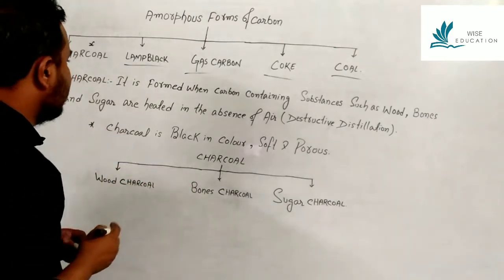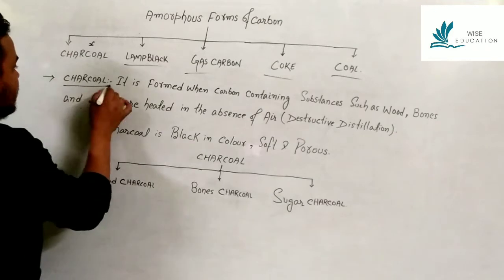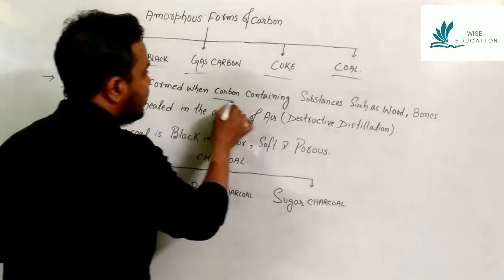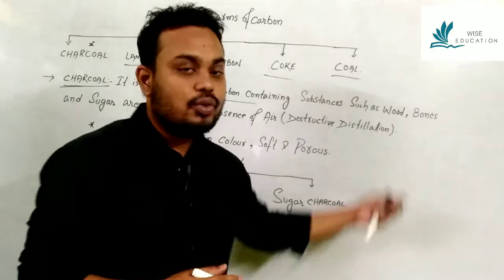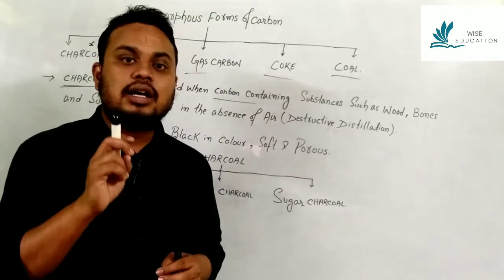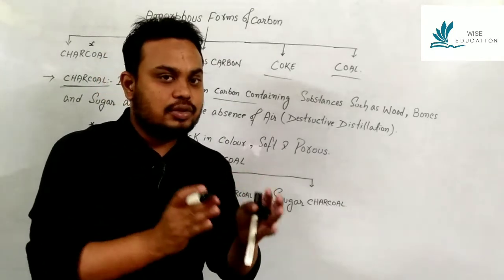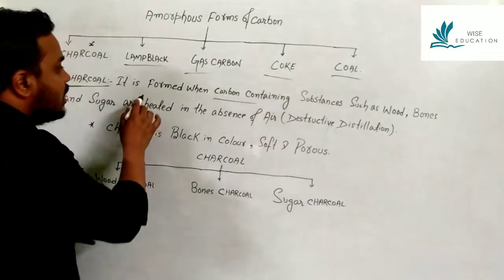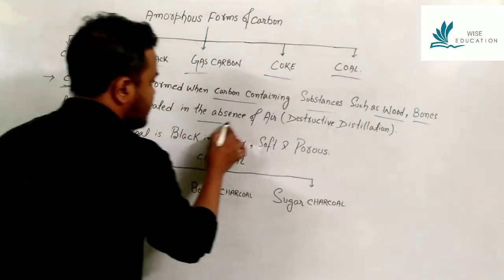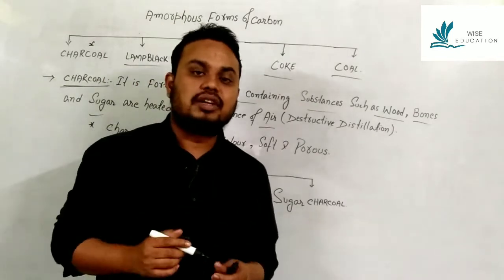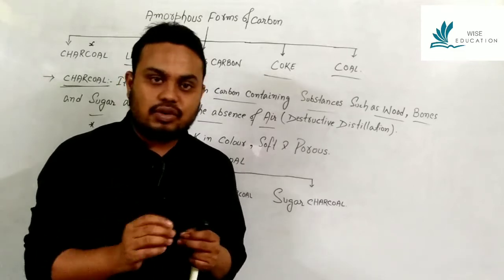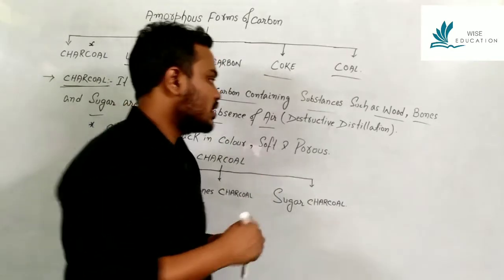We will now look at charcoal in detail. Charcoal is formed when carbon-containing substances such as wood, bones, and sugar are heated in the absence of air. These are called organic substances. This process of heating in the absence of air is called destructive distillation.